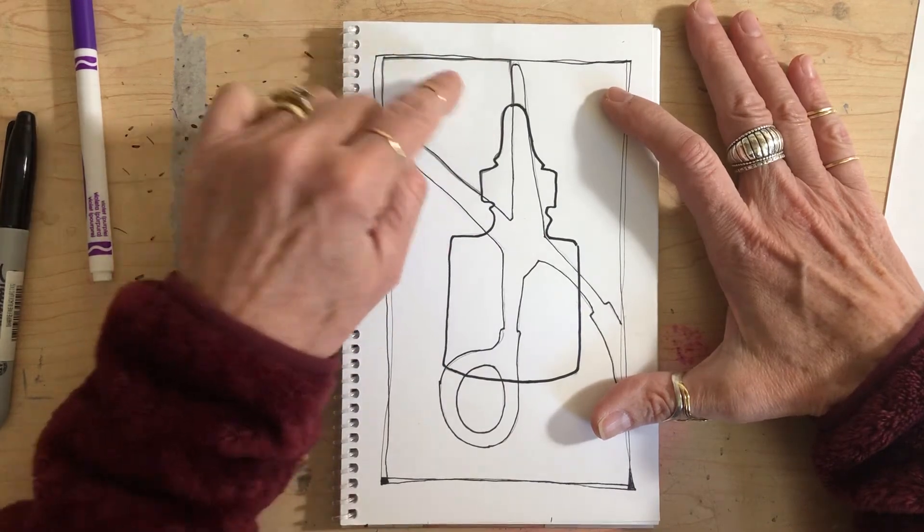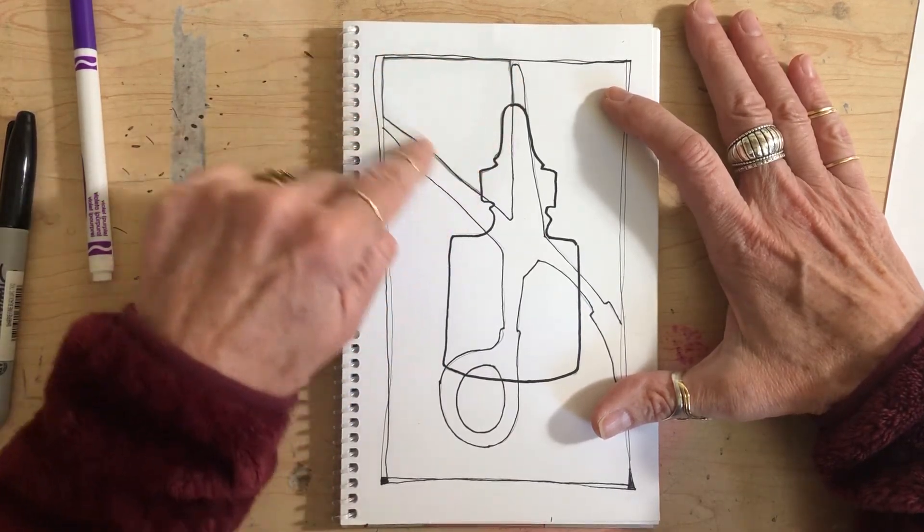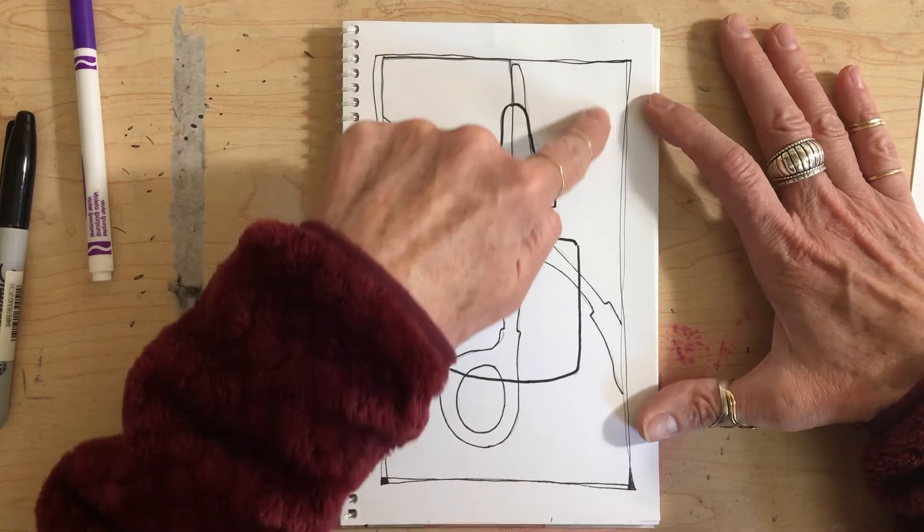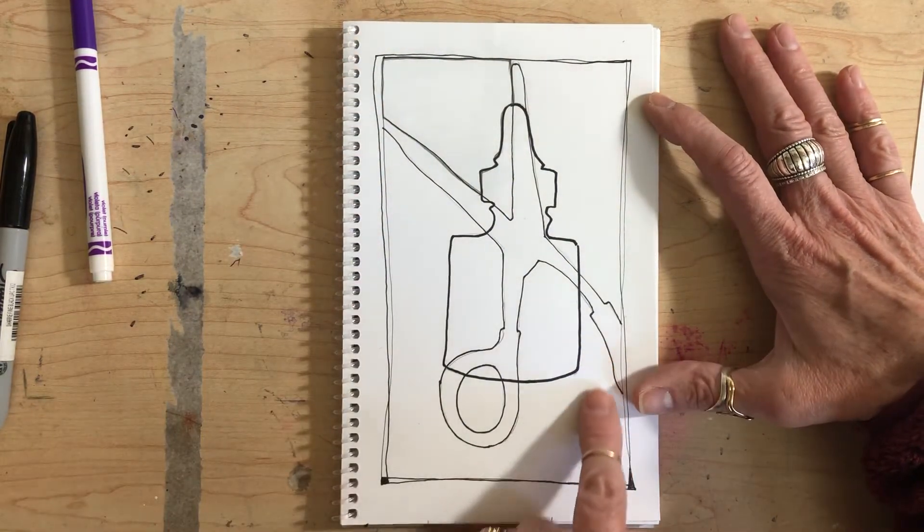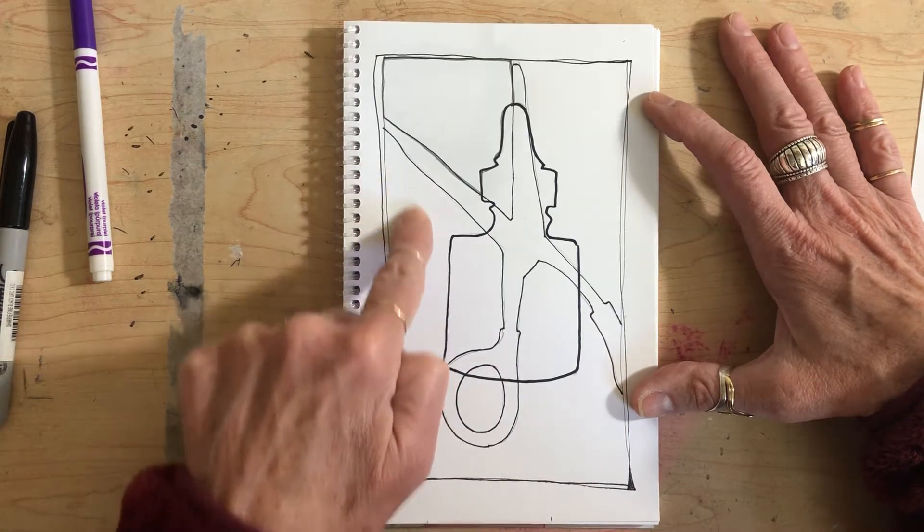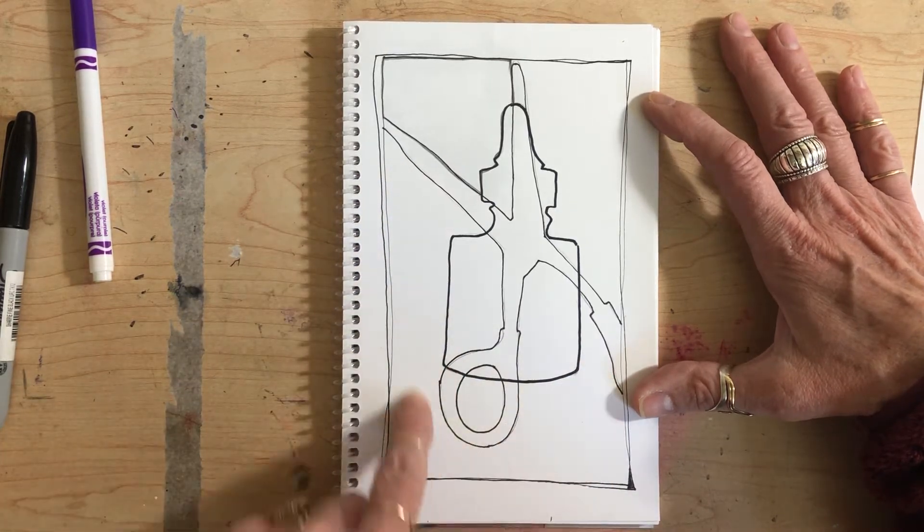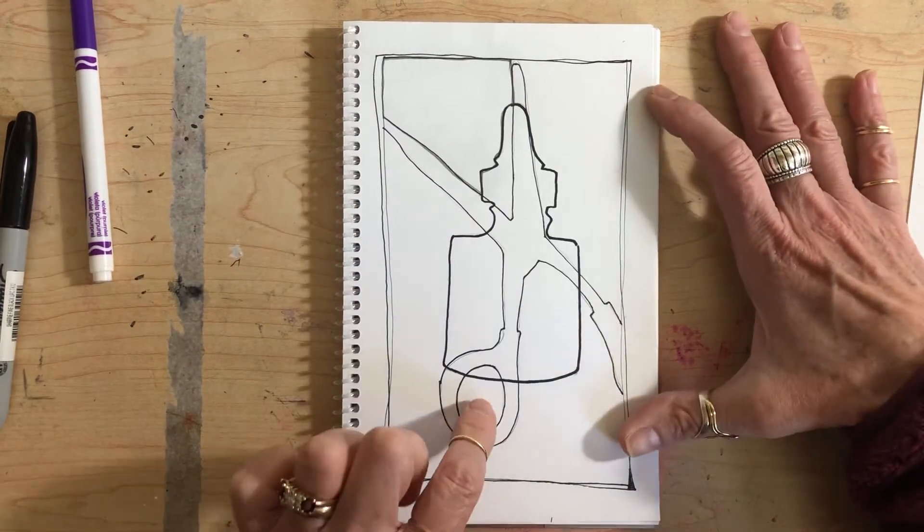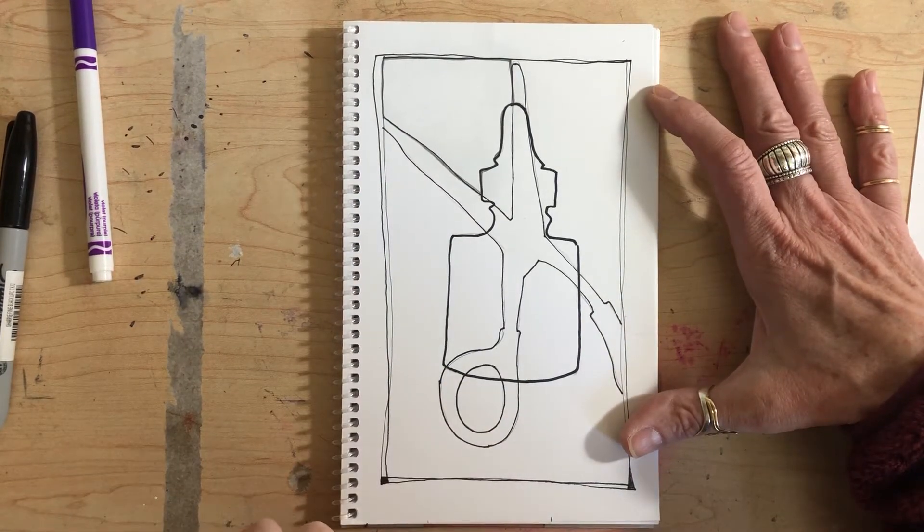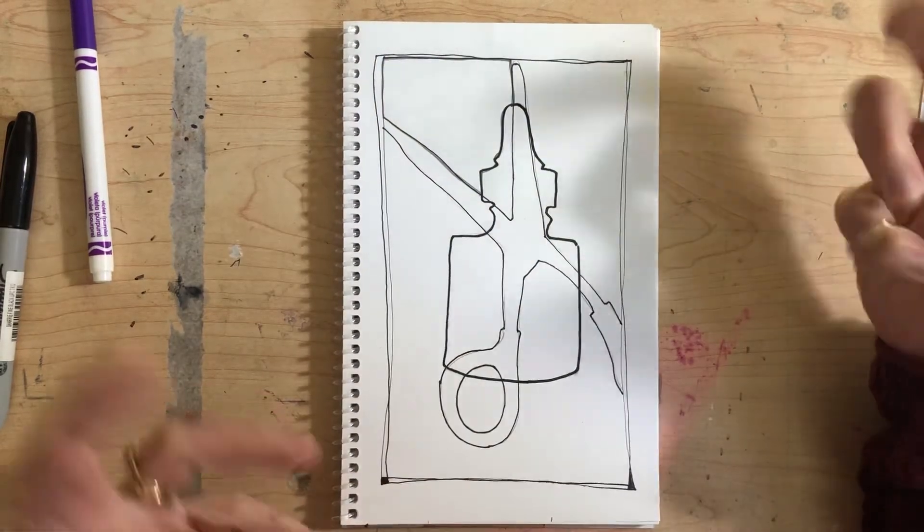This area here is a shape with a black outline around it. This is a shape with a black outline around it. Same thing here. This whole thing is a background shape with a black outline around it. We could call that a background shape as well, the inside of the scissor handle.